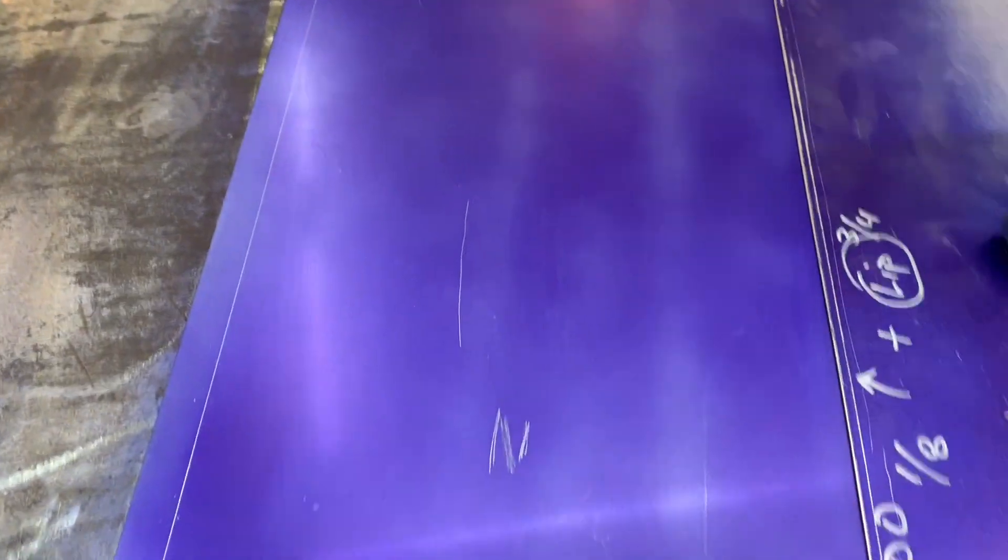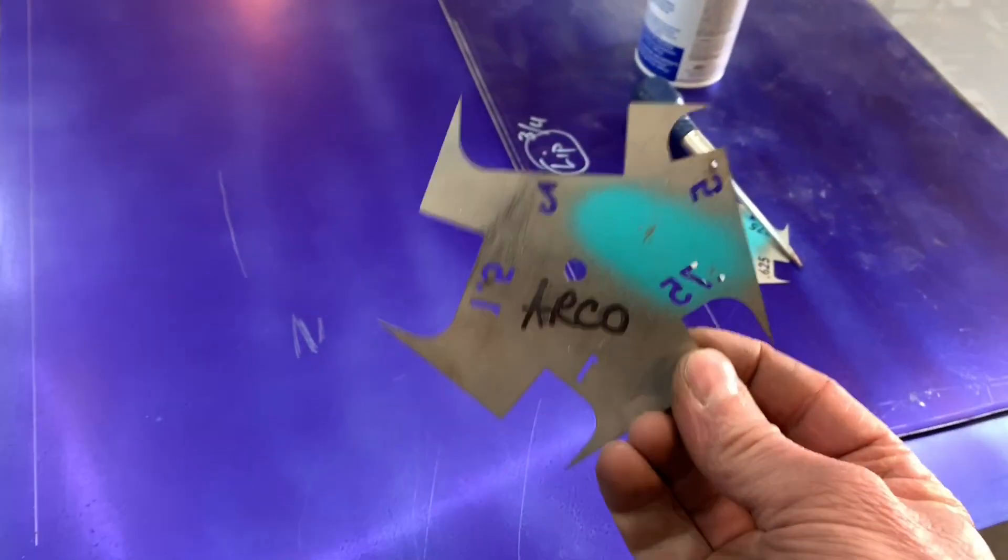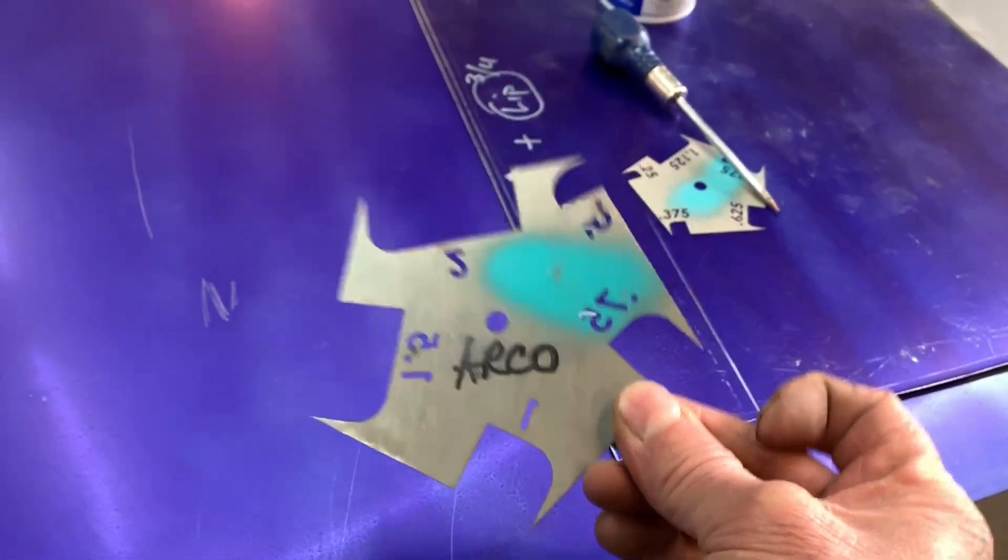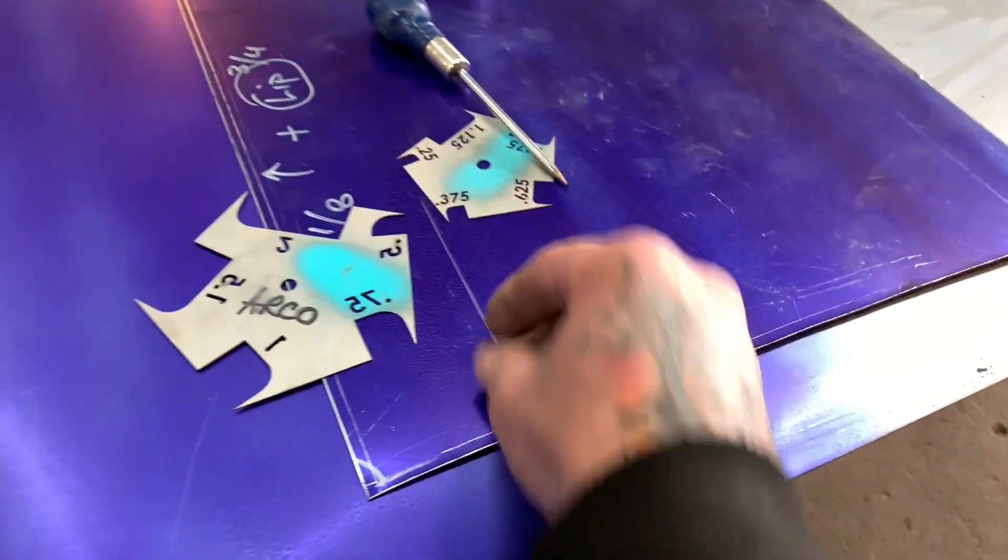And that's, you know, super easy to see. And then when you get ready to cut it, it just makes your life so much easier. Speedway carries these. Summit carries these. A lot of fabrication places like Woodward Fab and a bunch of different places. Look online, eBay, Amazon, whatever.